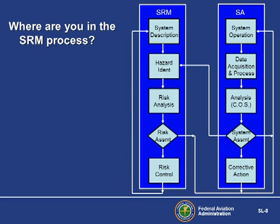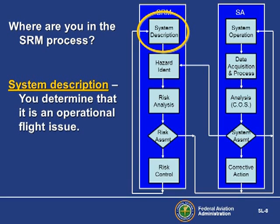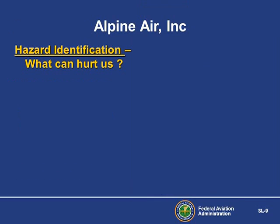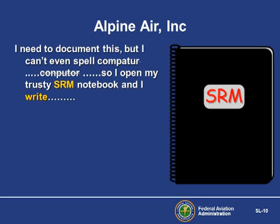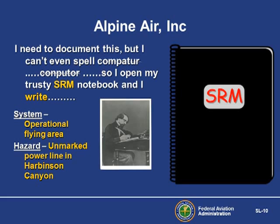Let's track our example through the safety risk management and safety assurance models. Where are you in the SRM process just now? You are describing the system where the hazard resides. What's next? You need to identify the hazard. You ask the questions who, what, when, where, and so forth. Before you forget, you open your simple SRM notebook and write: System – Operational Flying Area; Hazard – Unmarked Power Line in Harbison Canyon.